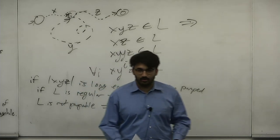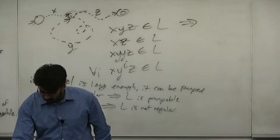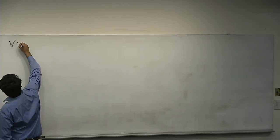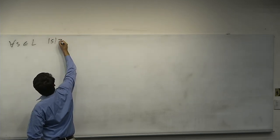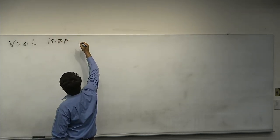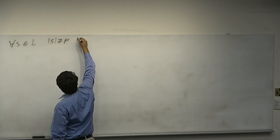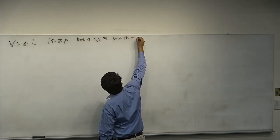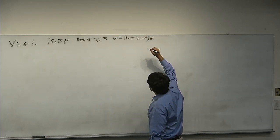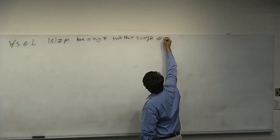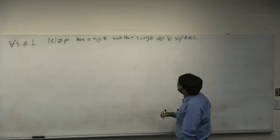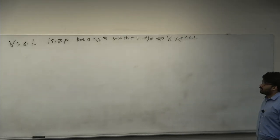Let's formalize what the pumping lemma says, then take the negation as a proof strategy. For all S in L with |S| ≥ P, there exist X, Y, Z such that S = XYZ, which implies that for all i, XY^i Z is also in L. This is a formulation of what it means for a language to be pumpable.